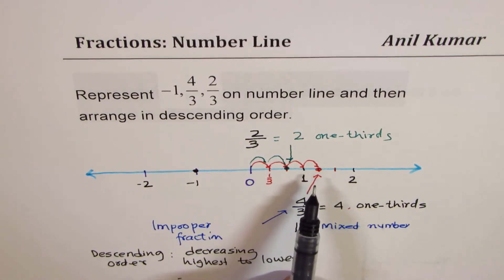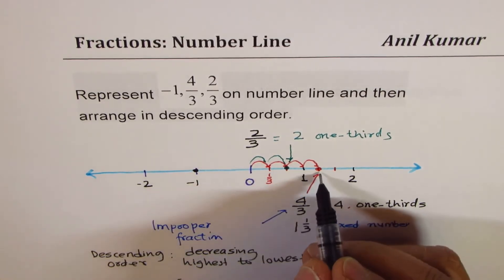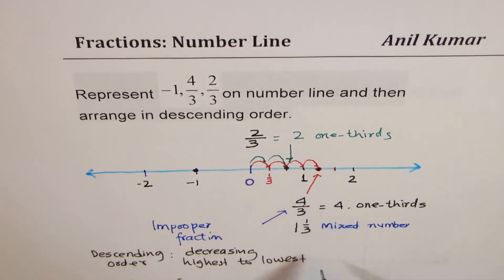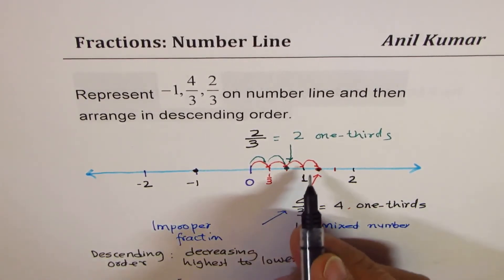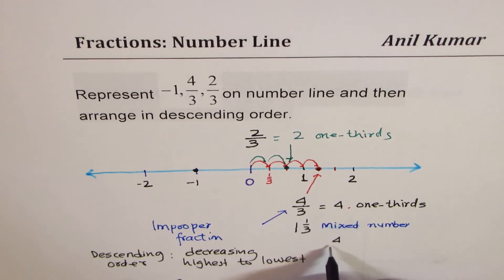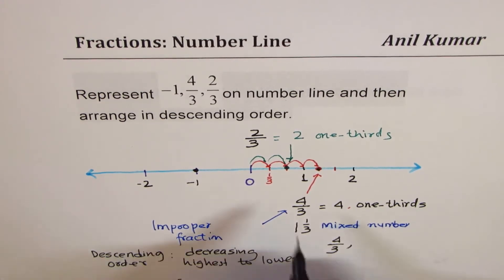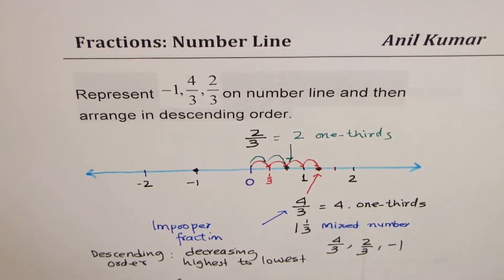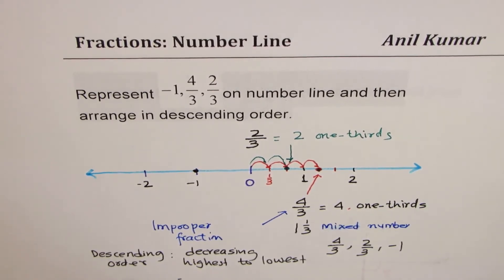The number on the rightmost side is 4/3, so we write 4/3 as the greatest. Next is 2/3, and then negative 1, which is the lowest of these three numbers. In this part of the video we have understood fractions, improper fractions, mixed numbers, and how to represent them on a number line.